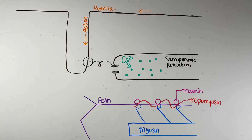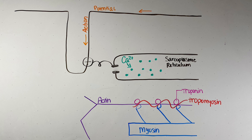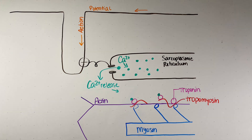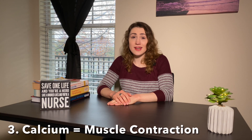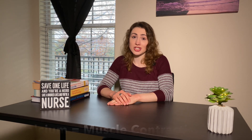Within the cell, calcium entering the cytoplasm causes contraction of muscle fibers. Action potentials in muscles cause the release of calcium from the sarcoplasmic reticulum. Calcium then binds to troponin, which moves tropomyosin out of the way so actin and myosin can meet and cause muscle contraction.